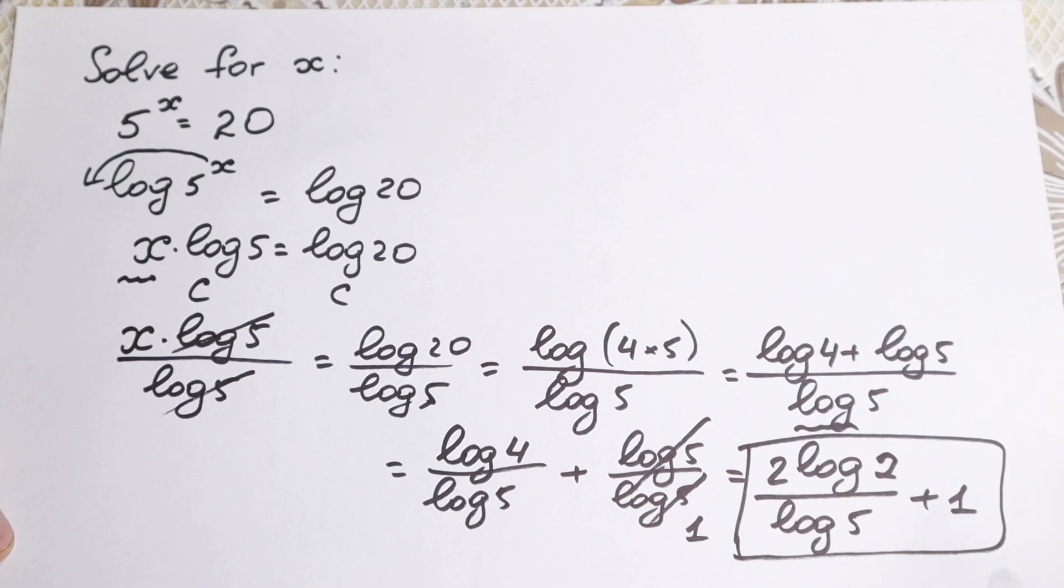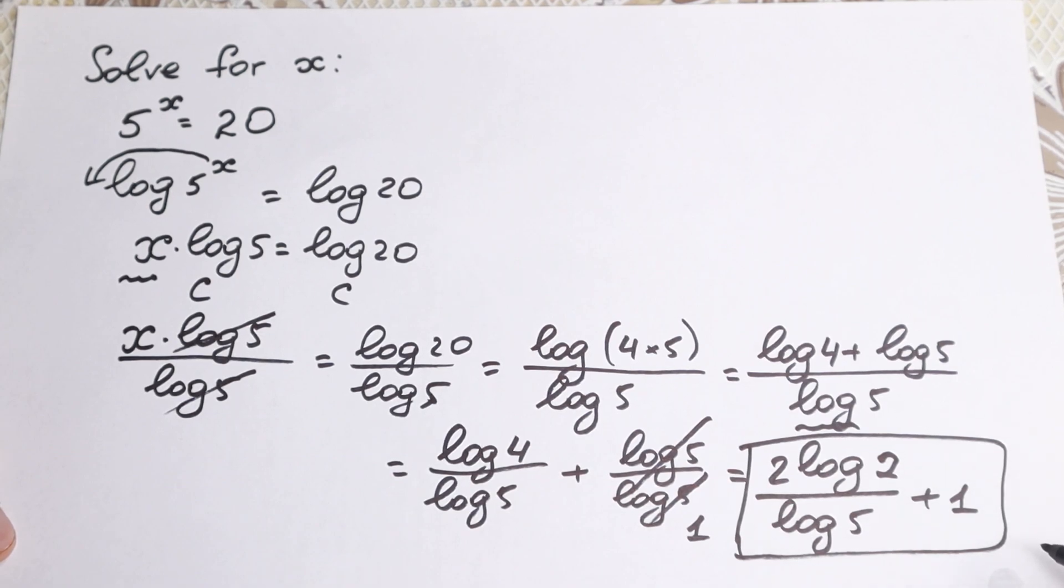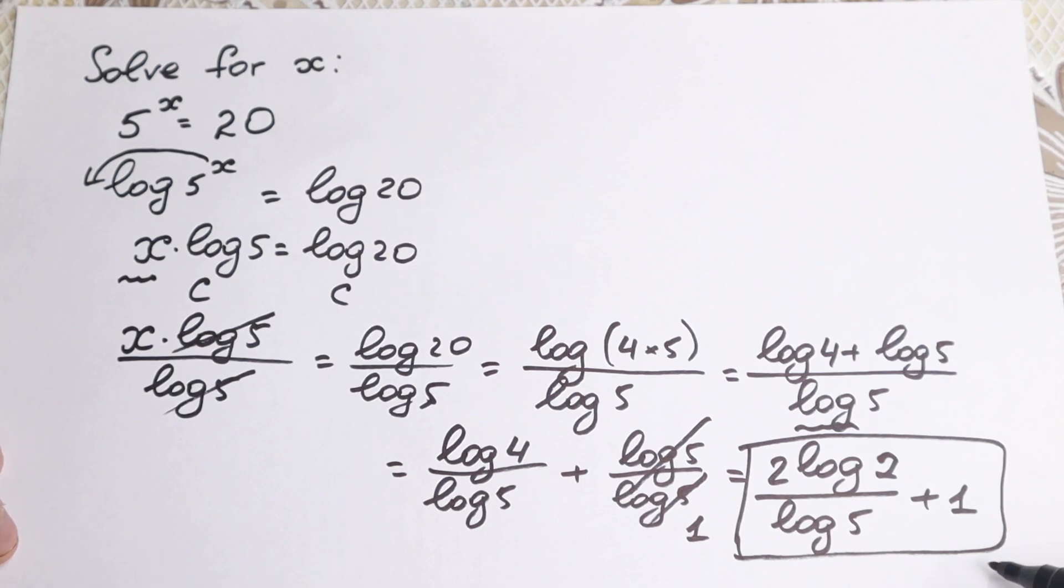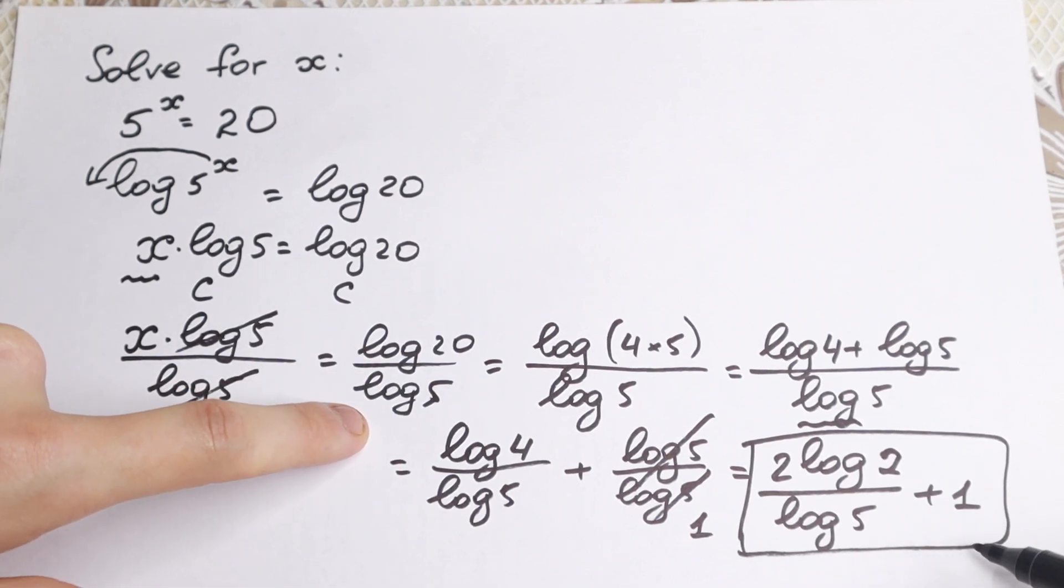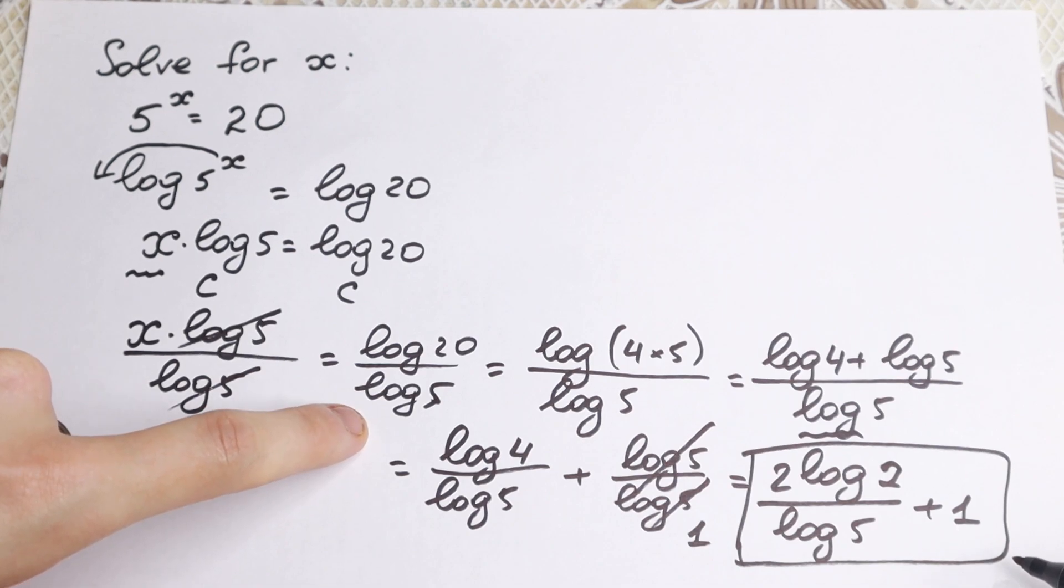Because we use a lot of properties right here, and we find this is the maximum of simplifying right here, we cannot simplify this more. Of course, we can easily find our approximate answer from this expression, but this is mathematically the final answer. Maximum of simplifying.